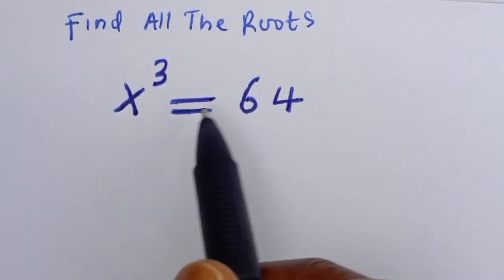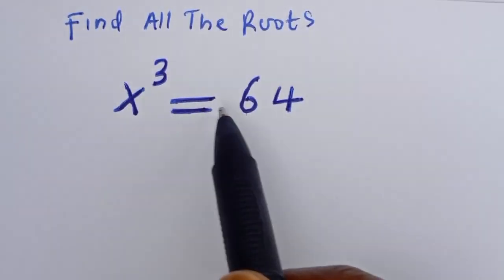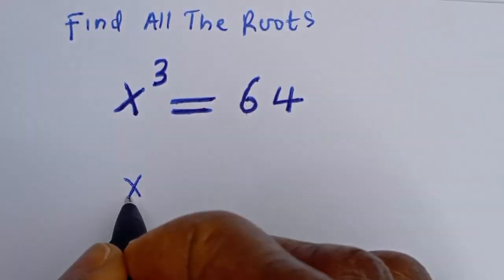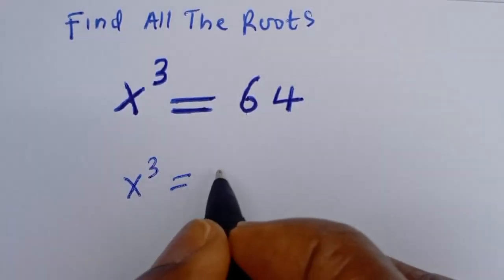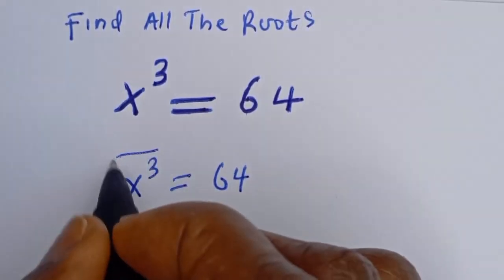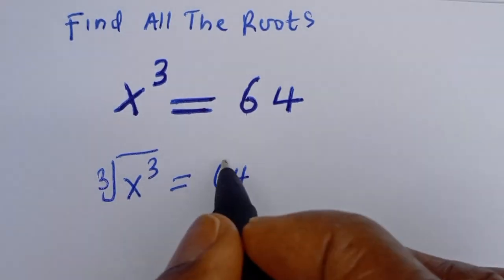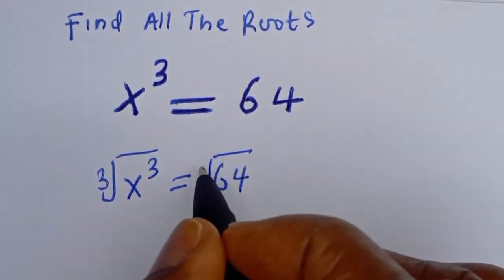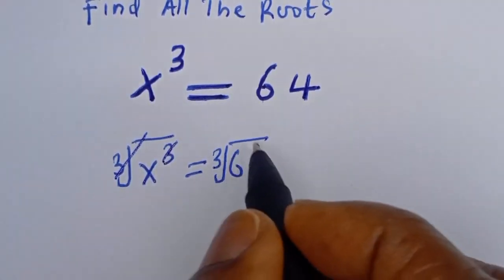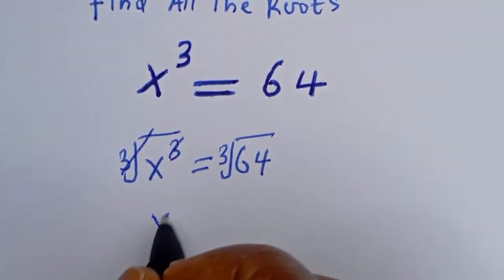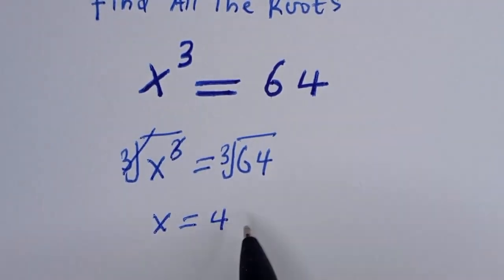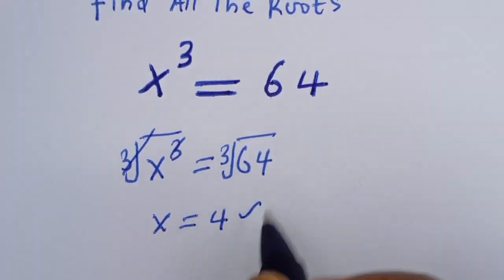Hello. How to find all the roots of this cubic equation. If you have s to the power of 3 is equal to 64, let's take the cube root of both sides: cube root of s³ equals cube root of 64, these cancel, so s is equal to 4. Now, is s equal to 4 the only solution of this equation? No.